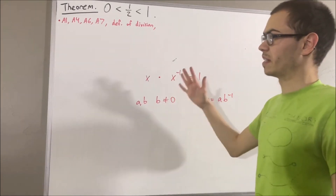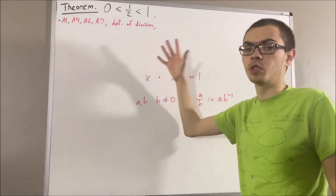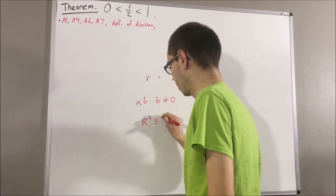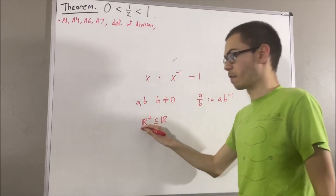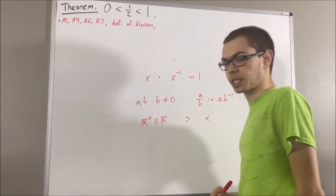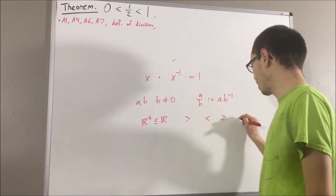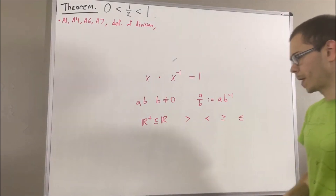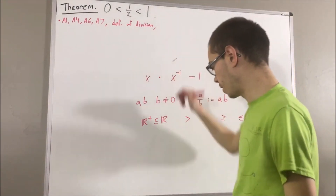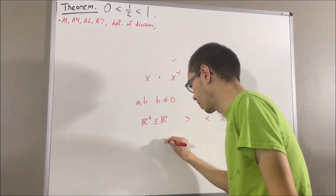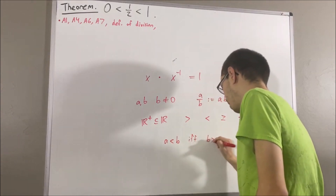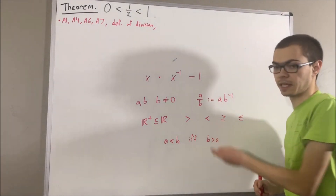Our real number system is equipped with a subset which we call the set of positive real numbers, denoted as R plus. Using this set, we have defined the greater than, less than, greater than or equal to, and less than or equal to relations, with details in the description below. The important thing for this video is that given any two real numbers a and b, a is less than b is equivalent to saying b is greater than a — this is our definition of the less than relation.